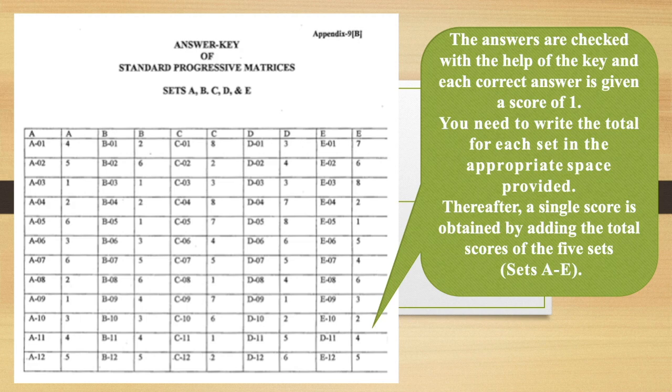After that, total up the columns. So you would have a total of the score in column Set A, then score of Set B, score of Set C, score of Set D, and score of Set E. You will get five scores like this. Now total up these scores also to get a single score by adding all these together. That will be your raw score.